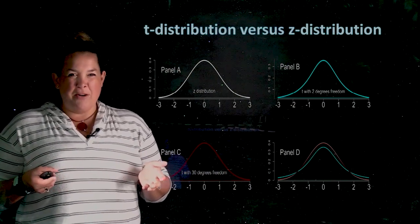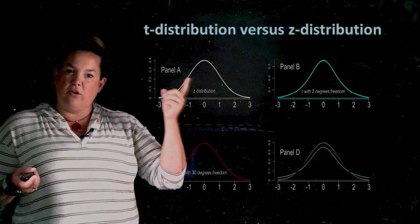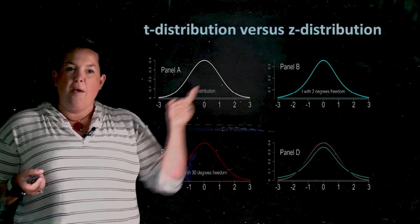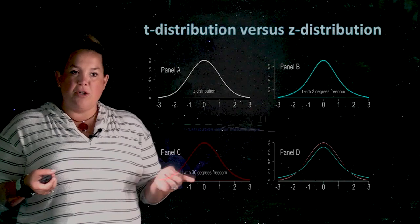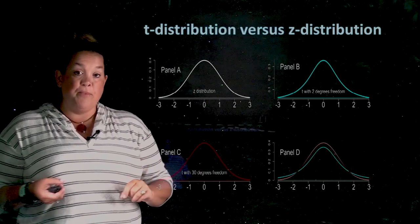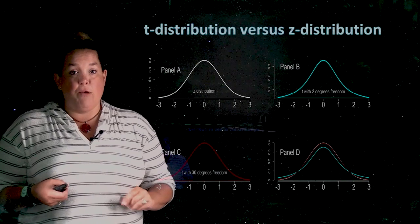Now, the other thing that you might notice, which is kind of new, is that there's one z-distribution, but these t-distributions are different depending on this measurement called degrees of freedom. So this is the first difference that we have.